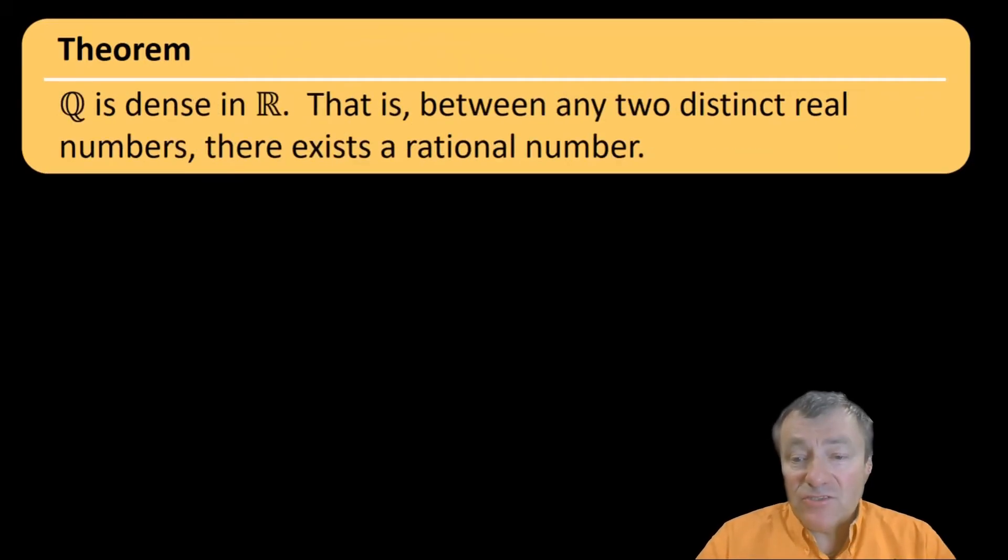If the previous result described how the integers sit inside the reals, then let's say something more about how the rationals sit inside the reals. And the most important thing to say here is that between any two real numbers, you can find at least one rational. According to that property, what we say is that the rational numbers are dense in the real number system.